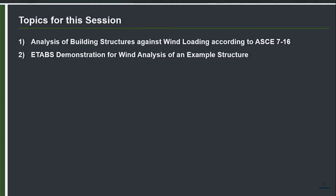In this session I will discuss the analysis of building structures against wind loading following the ASCE 7-16 approach for wind load calculations. At the end I will also have an ETABS demonstration for an example building and explain the main steps involved in automated wind load analysis for that particular example building.